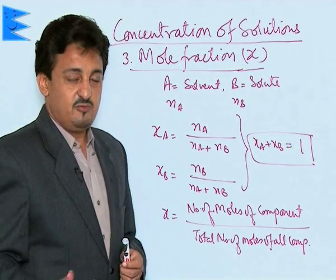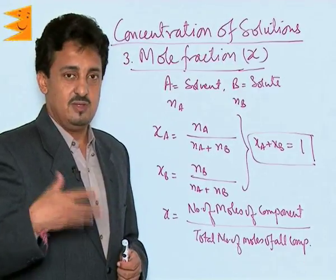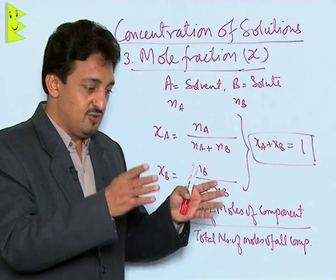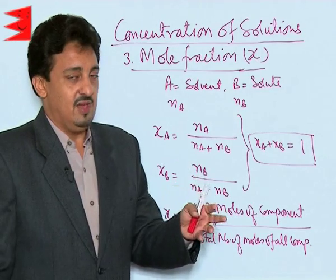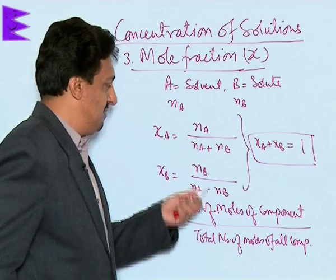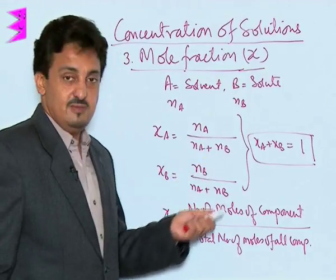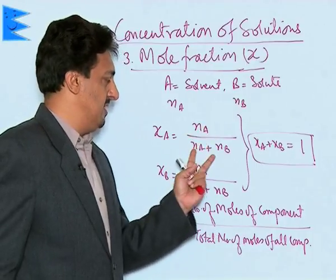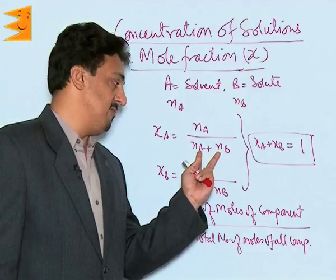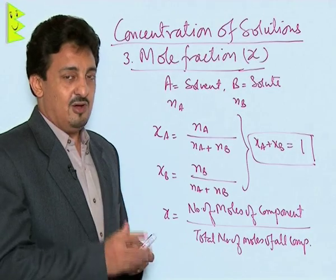Since the sum equals one, if we know the mole fraction of one component, we can easily find the mole fraction of the other. It is used to give a comparative account of whose moles are more or less in number. The formula is: χ_A = N_A / (N_A + N_B) for the solvent, and χ_B = N_B / (N_A + N_B) for the solute.